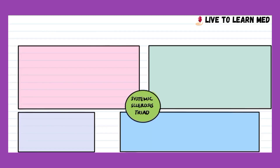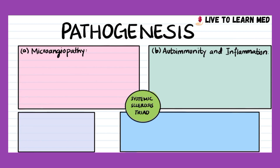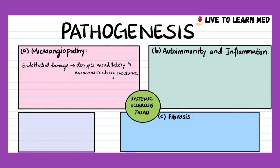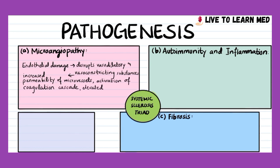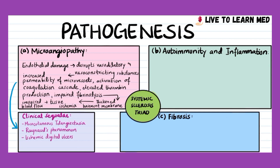The pathogenesis of systemic sclerosis involves three cardinal pathomechanistic processes: microangiopathy, inflammation and autoimmunity, and fibrosis. Microangiopathy refers to endothelial damage which disrupts vasodilation, leads to increased permeability of microvessels, activation of coagulation cascades, elevated thrombin production, and impaired fibrinolysis. This causes thickening of the basement membrane and perivascular adventitial fibrosis, ultimately leading to impaired blood flow and tissue ischemia. Prominent microangiopathy is a hallmark of systemic sclerosis, with clinical sequelae including mucocutaneous telangiectasias, Raynaud's phenomenon, ischemic digital ulcers, scleroderma renal crisis, myocardial involvement, and pulmonary arterial hypertension.